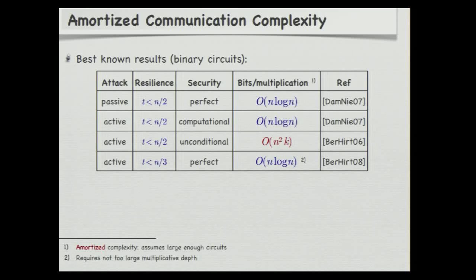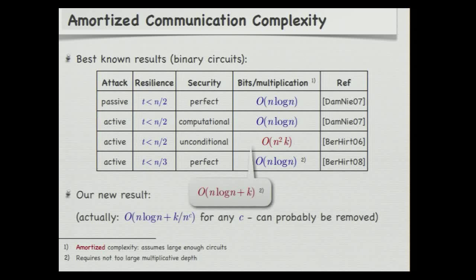Only in the unconditional setting with a dishonest minority, the best-known scheme requires n squared times k bits of communication per multiplication gate, where k is the security parameter. Our result is to show that also in the unconditional setting we can do with essentially linear communication complexity. There is an additional plus k, but this can be further reduced and probably removed altogether.